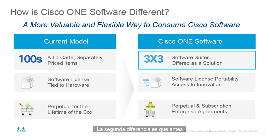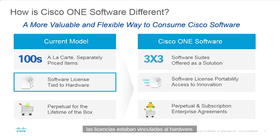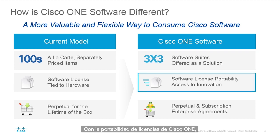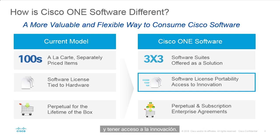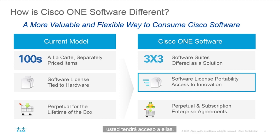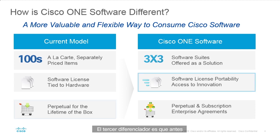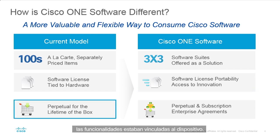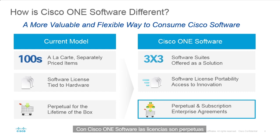The second major difference is that in the past, software licenses were tied to the underlying hardware. With Cisco One, you get license portability — you can transfer licenses to the next generation of our devices and get access to innovation as we add more capabilities into the software suites. The third main differentiator is that previously, when you refreshed a device, you had to purchase those licenses over again. With Cisco One Software, licenses are really perpetual because of license portability.